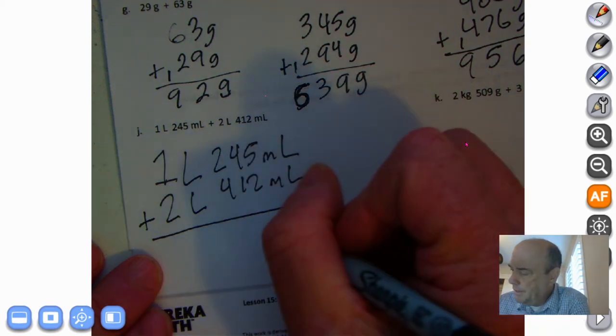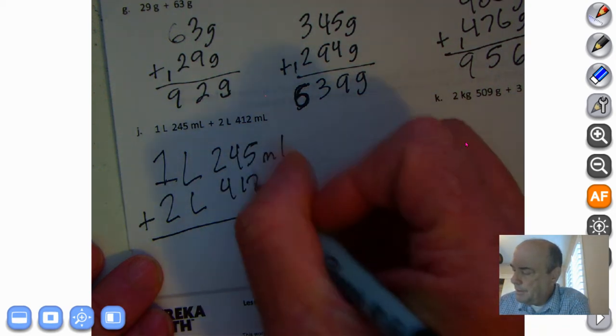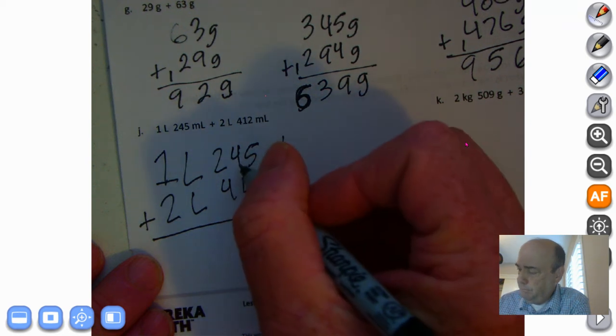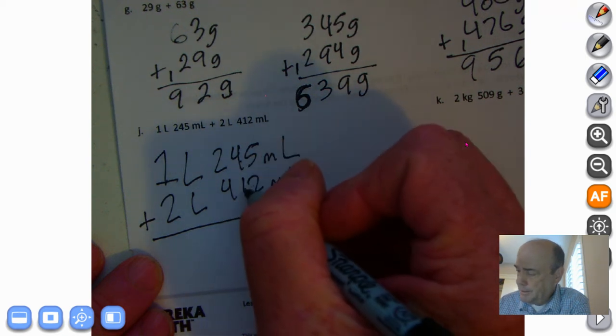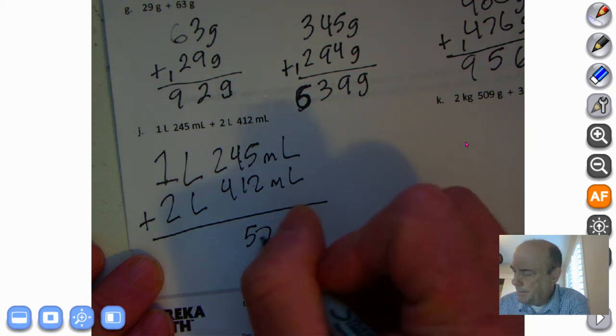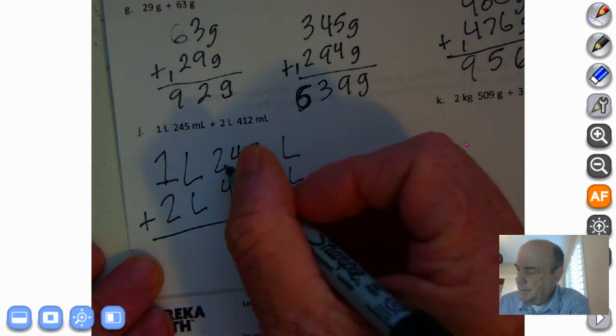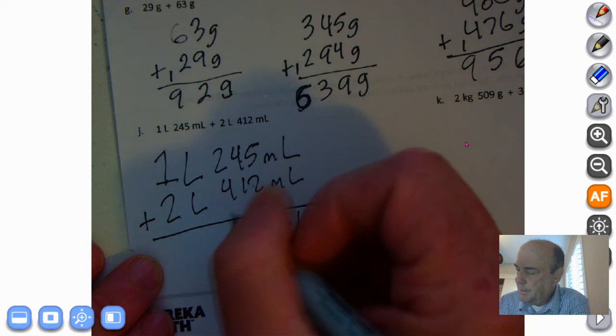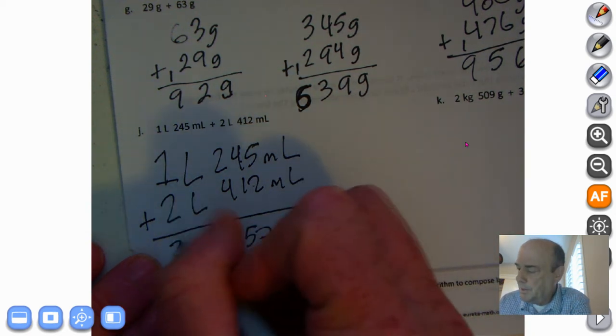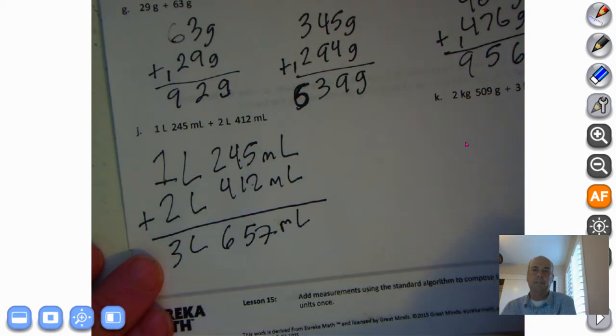Welcome back. We're going to bring down the milliliters. Five milliliters plus two milliliters is seven milliliters. 40 milliliters plus 10 milliliters is 50 milliliters. 200 milliliters plus 400 milliliters is 600 milliliters. So we have 657 milliliters and one plus two would be three liters, 657 milliliters.